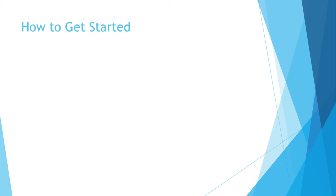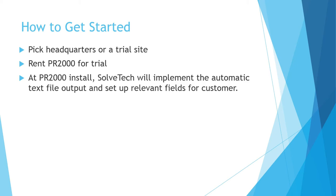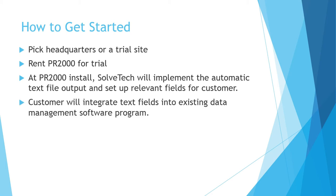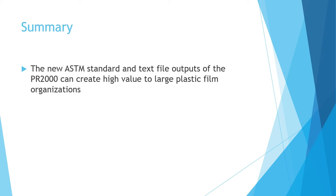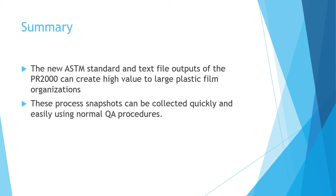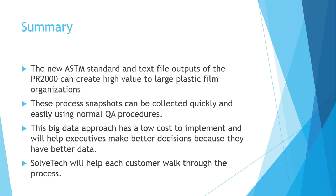To get started with Solvetech, we can pick a headquarters or a trial site to put a PR2000 in your quality lab — you can rent one, typically domestically in the U.S. Solvetech will implement all the text file outputs, and you can integrate this into your existing data management programs. You run the trial for about 3–5 months for around $2,500 a month. The QA team will run samples as part of their QA checks. The new ASTM standard and the text file outputs from the profiler can generate high value to a large plastic film organization. These process snapshots can be collected quickly and easily using normal quality control procedures. This big data approach has a low cost to implement and will help executives make better decisions because they have better data. Solvetech will help walk you through every step of this process, making it quick and easy to implement.